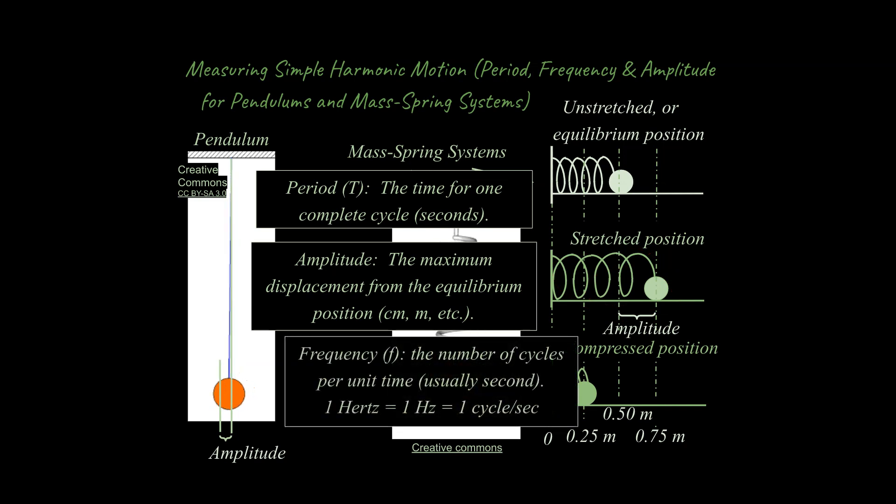Lastly, I do want to talk about something called a frequency. A frequency is a really crucial idea in a lot of electronics, a lot of electricity and magnetism, and in waves and vibrations, which is the unit that we're in right now. So frequency is the number of cycles per unit time. And so this is usually per second. There's a special unit you need to become aware of, and it's called a hertz. One hertz is equal to one cycle per second.